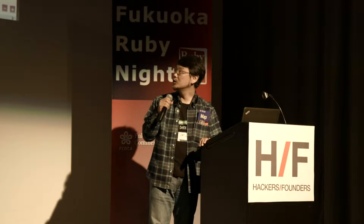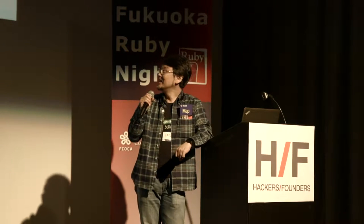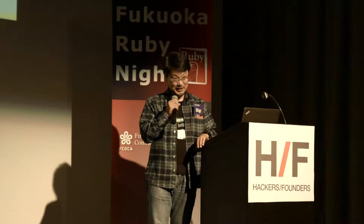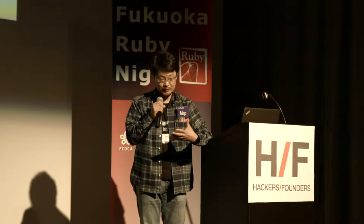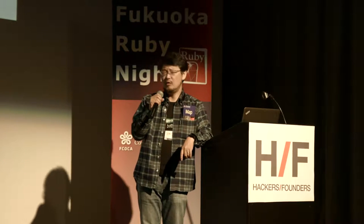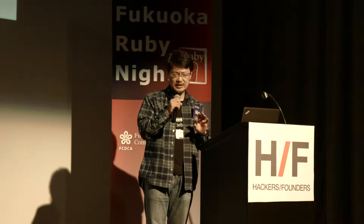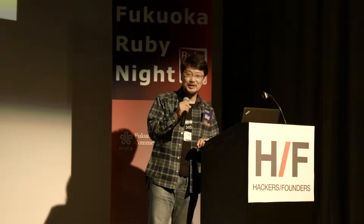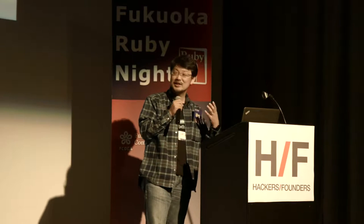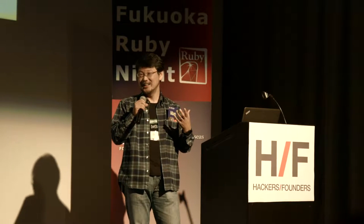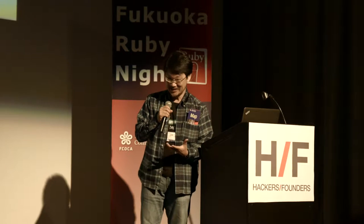The new VM was called YARV — Yet Another Ruby Virtual Machine. At the beginning of this millennium, there were several attempts to create a faster Ruby virtual machine — at least four or five attempts. But everyone, all of these attempts failed but one. This one — Yet Another Ruby Virtual Machine — succeeded and was merged into Ruby 1.9.